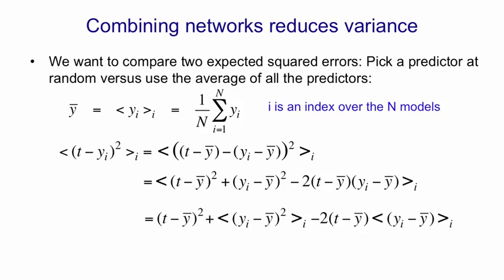So the first term, t minus y bar squared, doesn't have an i in it anymore, and so we can forget about the expectation brackets for that. That really is t minus y bar squared, and that's the squared error you'd get if you compared the average of the models with the target. And our aim is to show the thing on the left hand side is bigger than that—by using that average, we've reduced the expected squared error. So the extra term we have on the right hand side is the expectation of yi minus y bar squared, and that's just the variance of the yi. It's the expected squared difference between yi and y bar. And then the last term disappears.